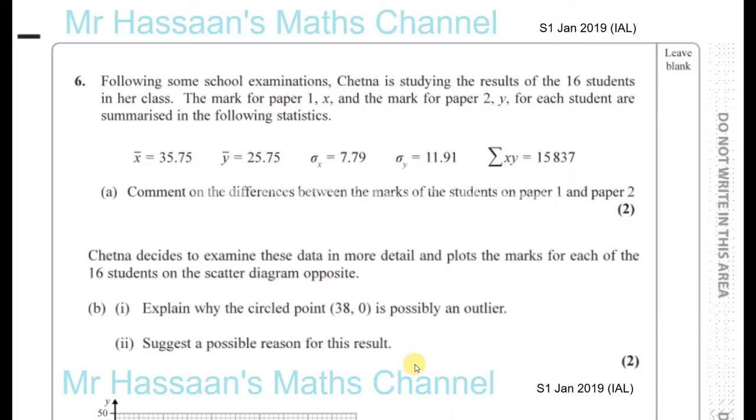Okay, question number six from January 2019, S1, the final question of this paper. Following some school examinations, Chetna is studying the results of the 16 students in her class. The mark for paper 1, X, and the mark for paper 2, Y, for each student are summarized in the following statistics.